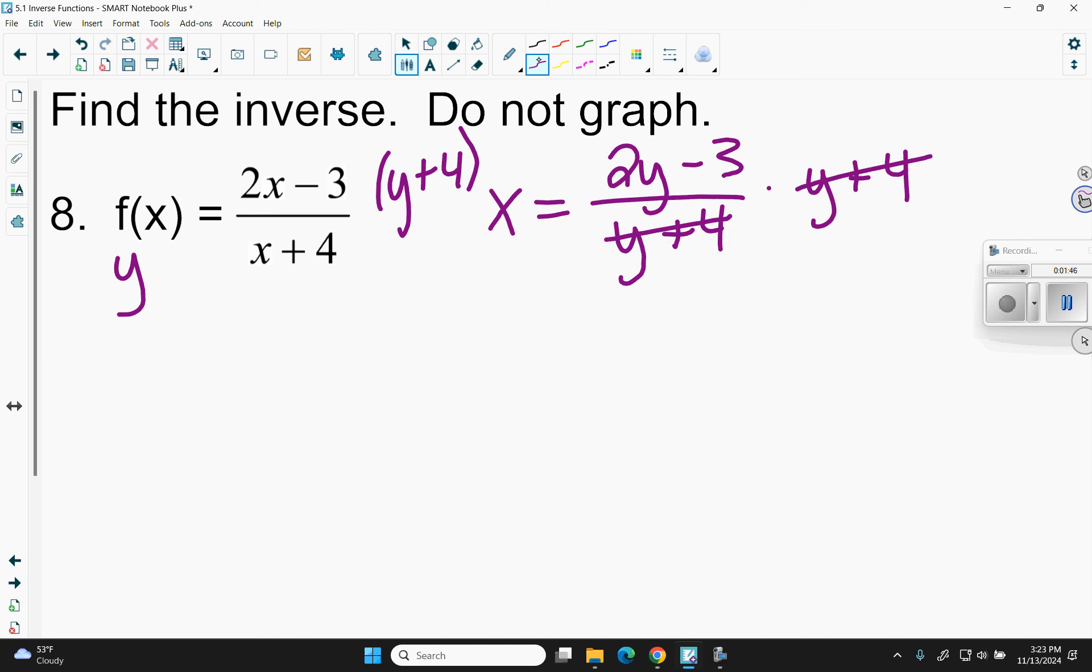So I'm going to multiply both sides by y plus 4 because that's going to cancel this part out. So then if I distribute that x, I'm going to get xy plus 4x equals 2y minus 3.